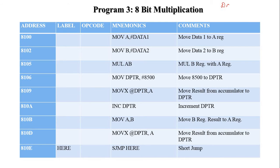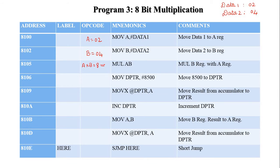Program 3: 8-bit multiplication. Consider two 8-bit data values. Data 1 is 02H and Data 2 is 04H. The first instruction moves Data 1 (02H) into the accumulator register, so accumulator equals 02H. Then Data 2 (04H) is moved to the B register, so B register equals 04H. We then multiply A and B: 2 × 4 = 08H. The result address 8500H is moved to the data pointer.